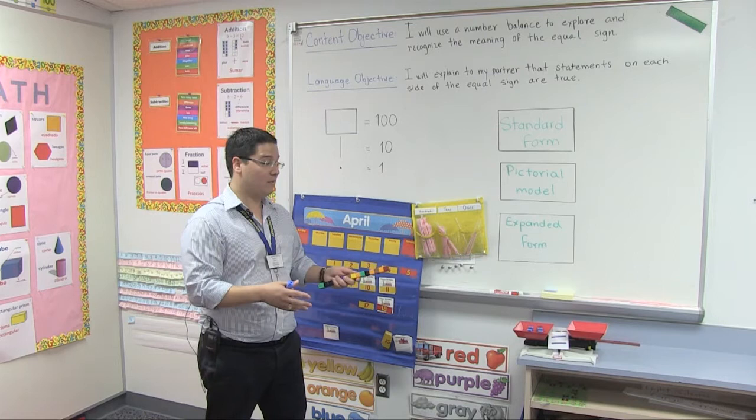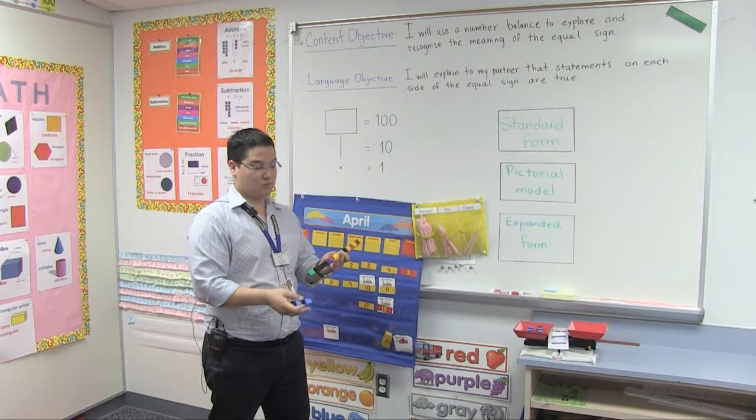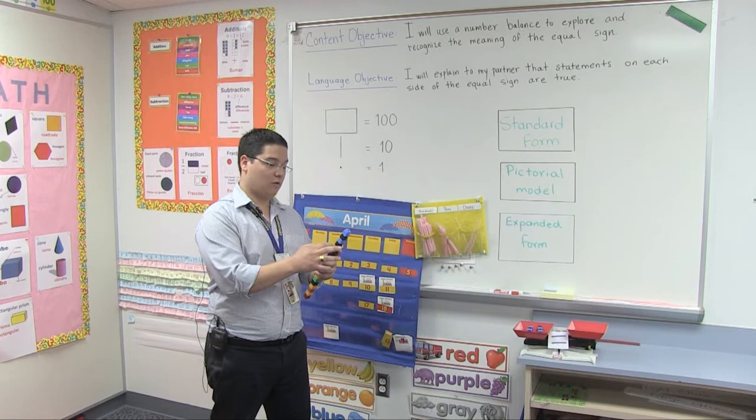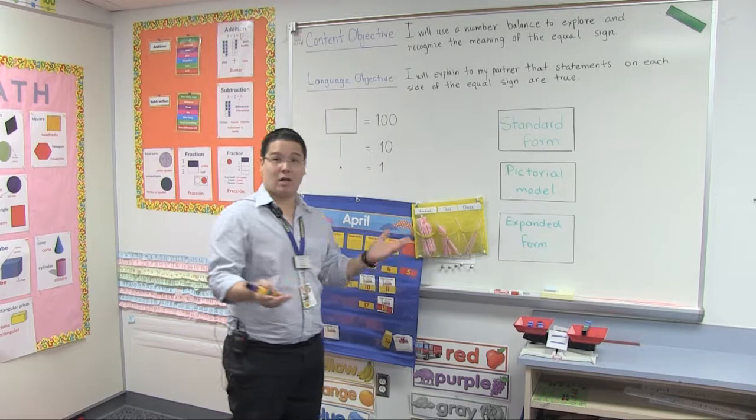The statements are true because they mean the same. So they will get some unifix cubes and say, okay, my answer is eight — one, two, three, four, five, six, seven, eight. They will put those unifix cubes in the other side and wait a couple seconds, and if they see it is balanced, it's because their answer is correct.